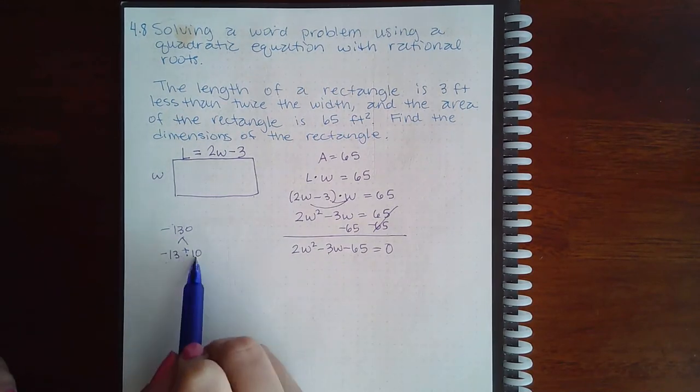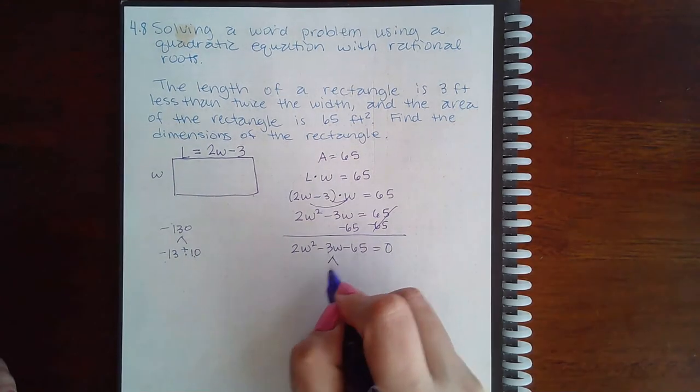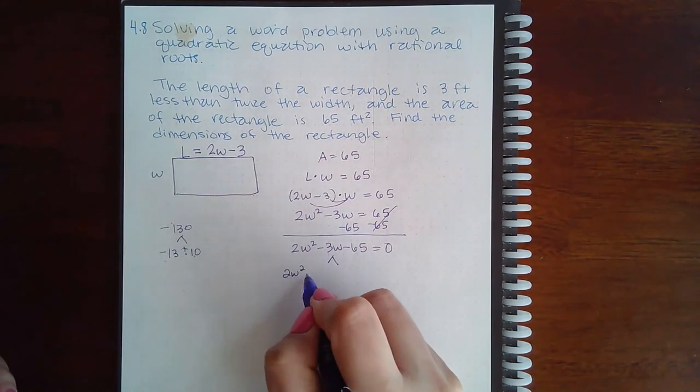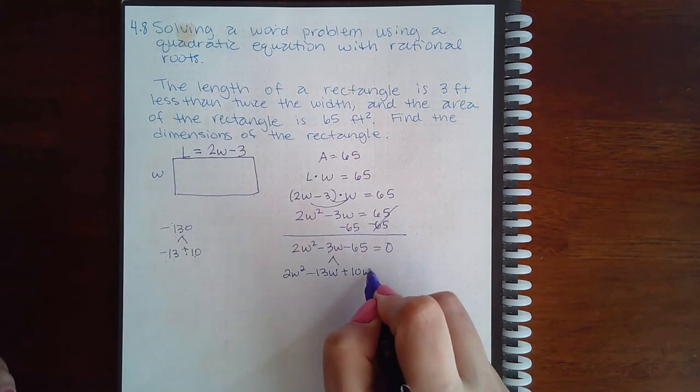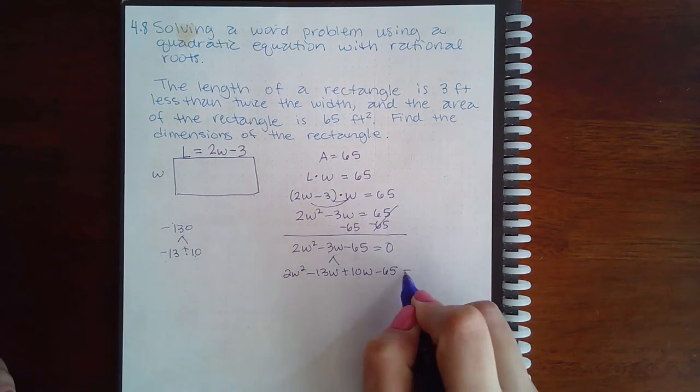Those multiply to give me negative 130 and combine to give me negative 3. So I have 2w squared minus 13w plus 10w minus 65 equal to 0.